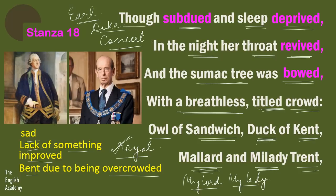So in this stanza the poet says that although the nightingale was very sad, depressed, and facing lack of sleep, her throat became better during the night and she prepared for the concert again. The sumac tree was full with a huge gathering of royal animals. There was the Owl of Sandwich referring to Earl of Sandwich, Duck of Kent referring to Duke of Kent, and Millard and Milady Trent referring to My Lord and My Lady of Trent.